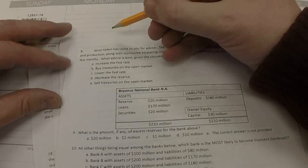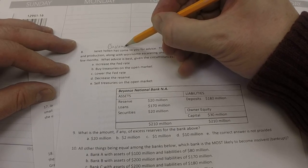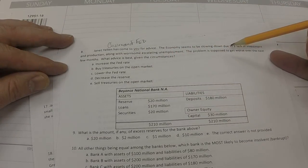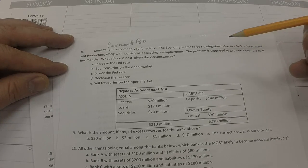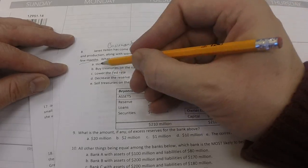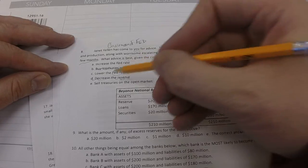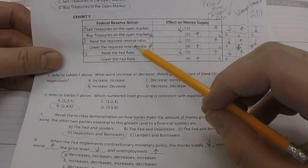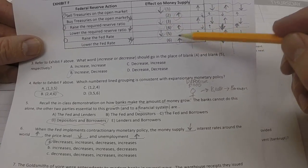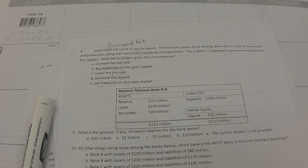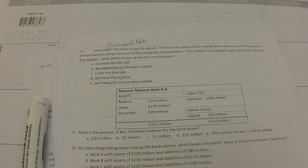Now we move on to the next question. Number eight. All right. Janet Yellen, the chairman of the Fed, has come to you for advice. Well done. Because they know, you know, she knows, you know your stuff. And the economy seems to be slowing down due to a lack of investment and production, along with worrisome escalating unemployment. The problem is supposed to get worse over the next few months. Now, since it's over the few months, we're looking for using the Fed rate. We're not going to mess with the treasuries. Not when it's over a few months. We're certainly not going to miss the reserve ratio or this. So it's either increase the Fed rate or decrease the Fed rate. We can go back to our chart here.